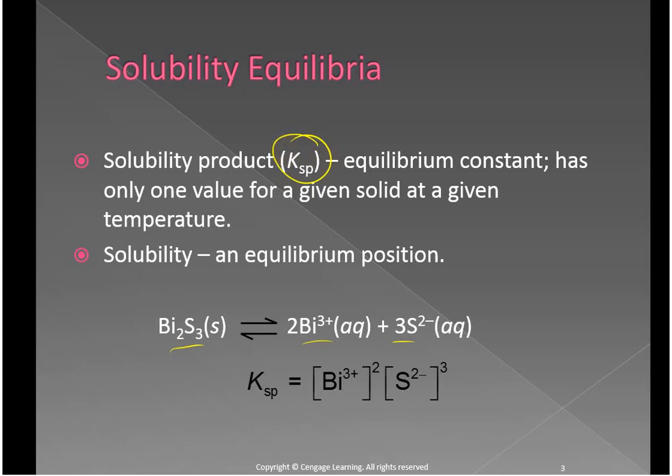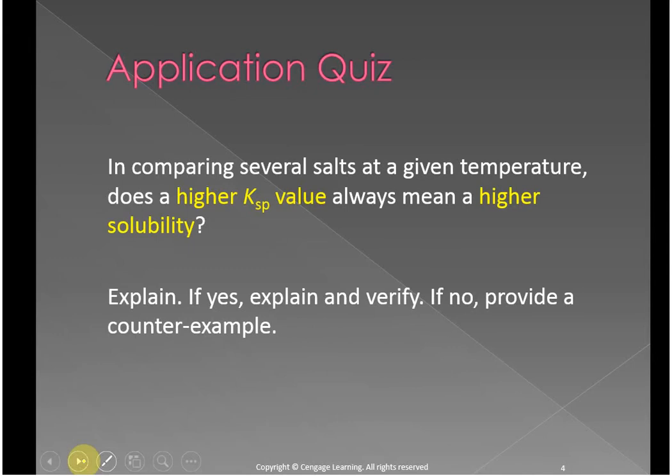which is a solubility product. It's really the same thing as before. It's just an equilibrium expression that does not have anything to do with solids or liquids, only aqueous and gaseous substances. So, if you were comparing the solubility of salts at a given temperature, does a higher KSP value necessarily mean a higher solubility?